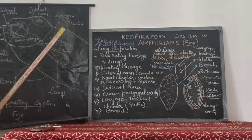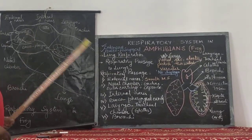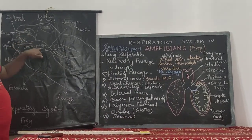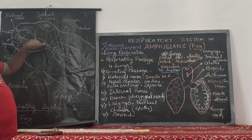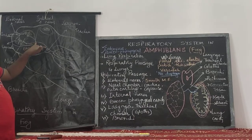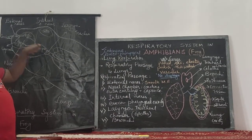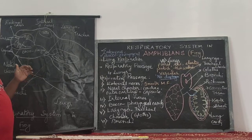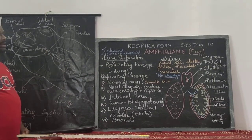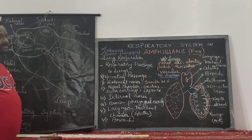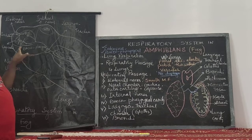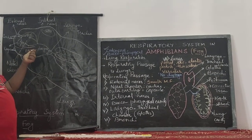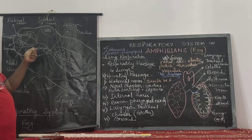The air which is rich with oxygen enters from the nasal chamber into the buccopharyngeal cavity through the opening of the internal nase. The buccopharyngeal cavity is a very vital cavity seen in amphibians. It is the combination of the region of the buccal cavity and the pharynx.